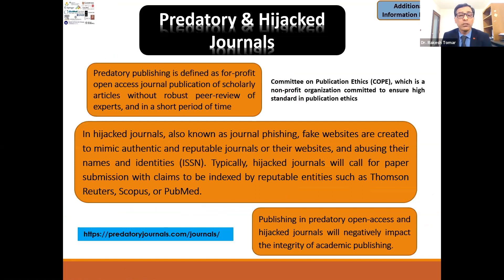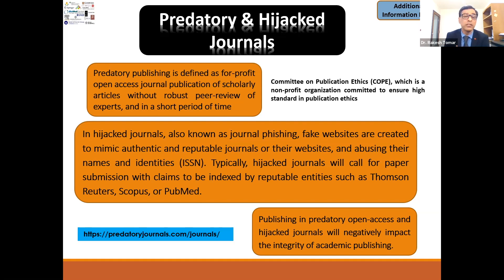Before going for any publication, most universities comply with rules about predatory and hijacked journals. You should not try to publish in journals that are not recognized by your university, institution, or authorities. Predatory publishing is defined as for-profit open access journal publication where you pay publication charges and the journal publishes your paper without any robust review, giving acceptance in a very short period. They just want money. So that publication has no utility or value — these are called predatory publications.